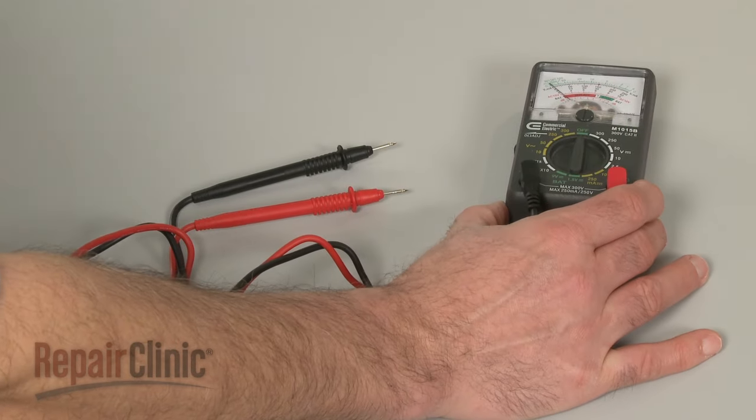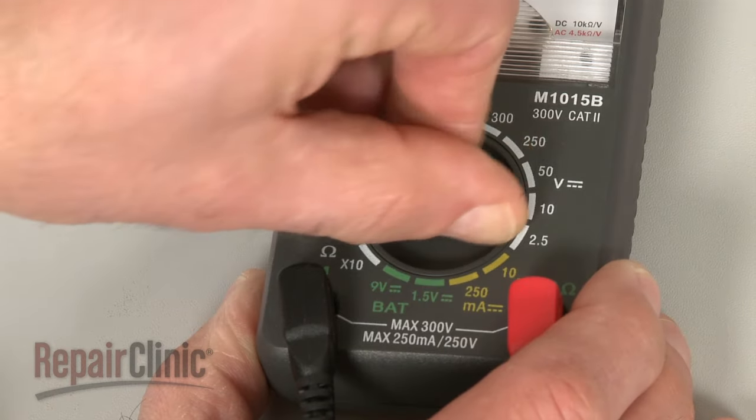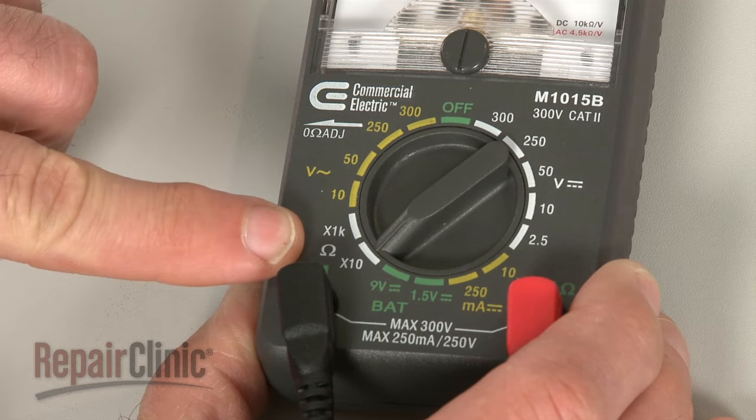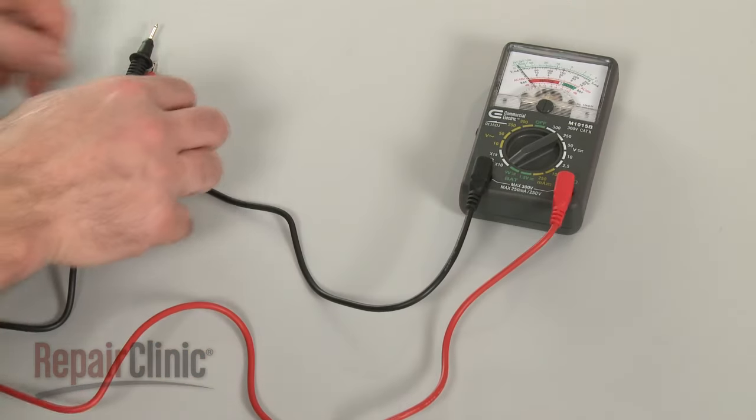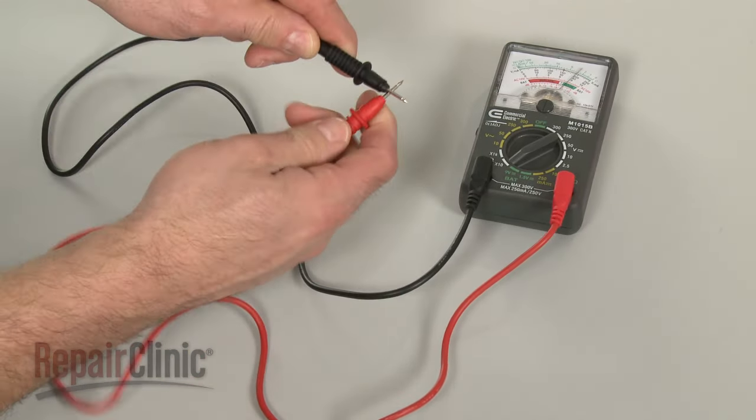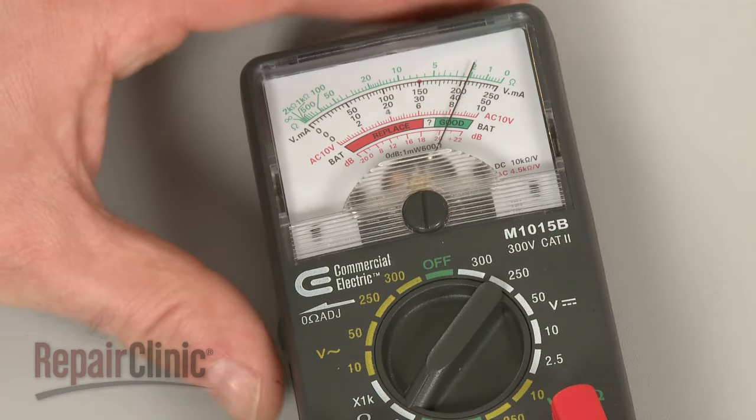When using an analog model, first rotate the range selection dial to the lowest setting for ohms of resistance. Then calibrate the meter by pinching the probes together while adjusting the needle to read zero.